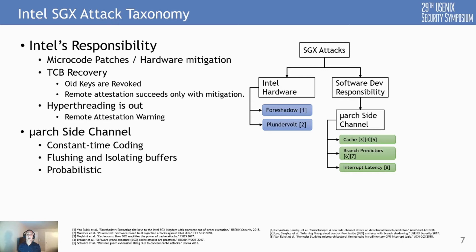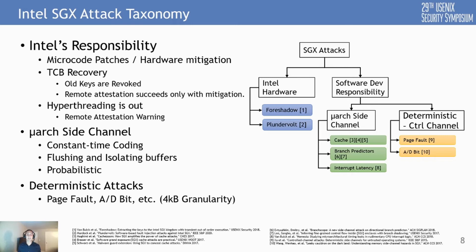There is a second category of these attacks that we cannot easily mitigate, and they are called control channel attacks. The reason these are called control channel attacks is that they are, for the most part, deterministic, and they exploit architectural features like the way page tables are handled to probe access patterns of enclave programs.